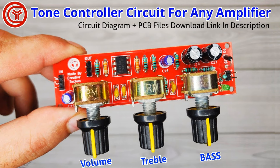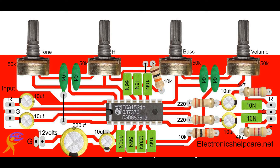EMI/RFI filters prevent electromagnetic interference and radio frequency interference from affecting power lines and sensitive electronics. Medical Devices: Signal Isolation — in devices like ECGs, EEGs, and other biosignal acquisition systems, filters isolate relevant biosignals from noise and interference. Heartbeat and Brain Wave Monitoring — band-pass filters help capture specific frequency bands in biological signals for monitoring heart and brain activity. Noise Reduction — low-pass filters reduce electrical noise from surrounding equipment, ensuring accurate readings.